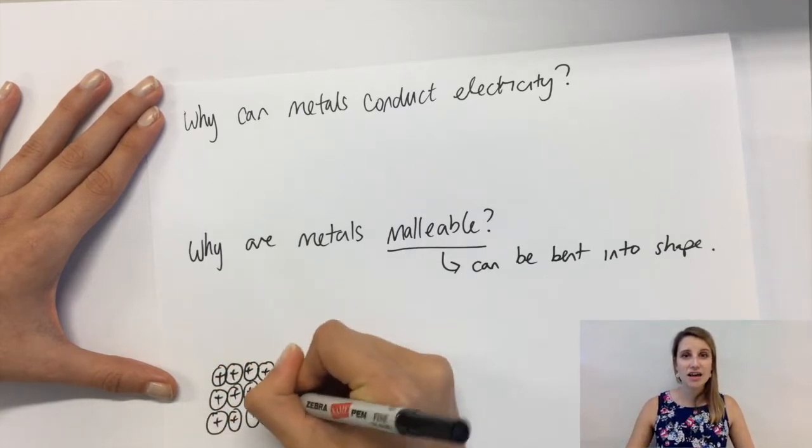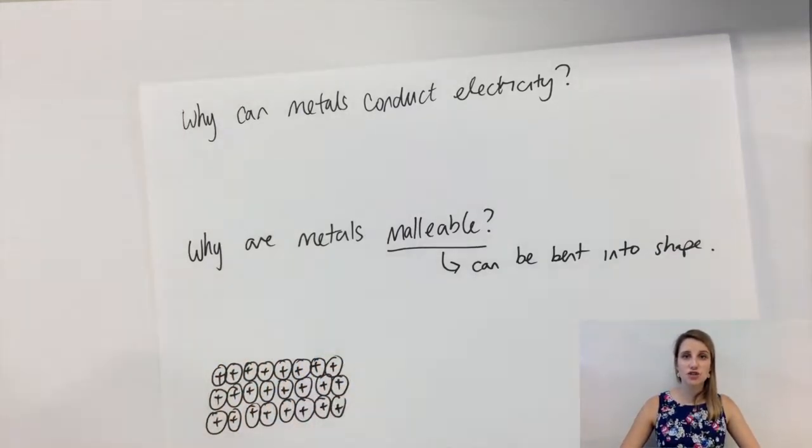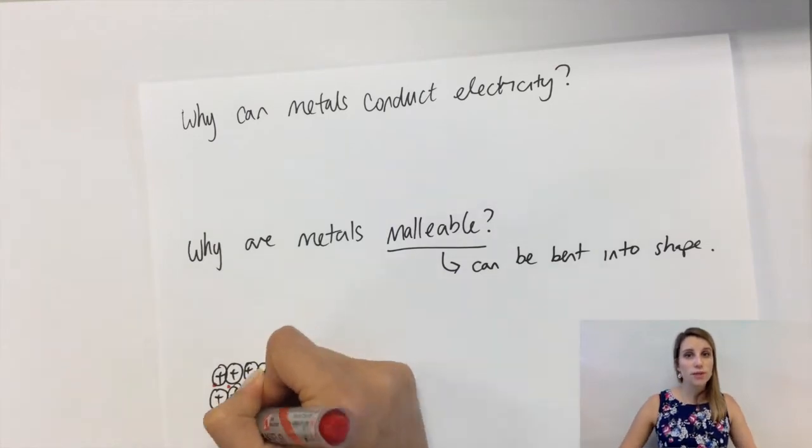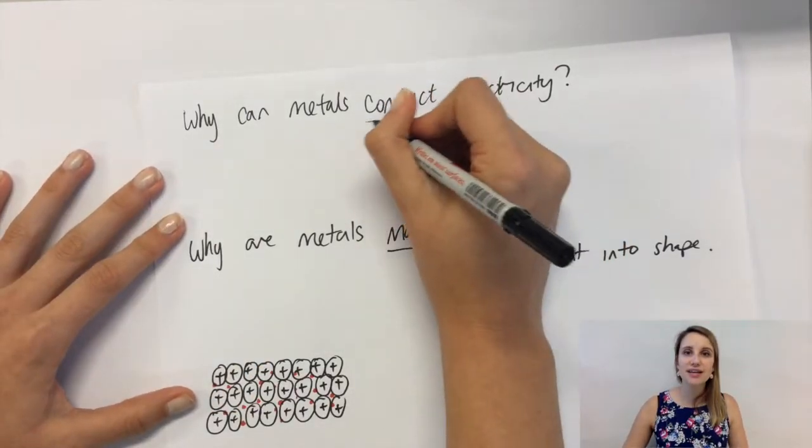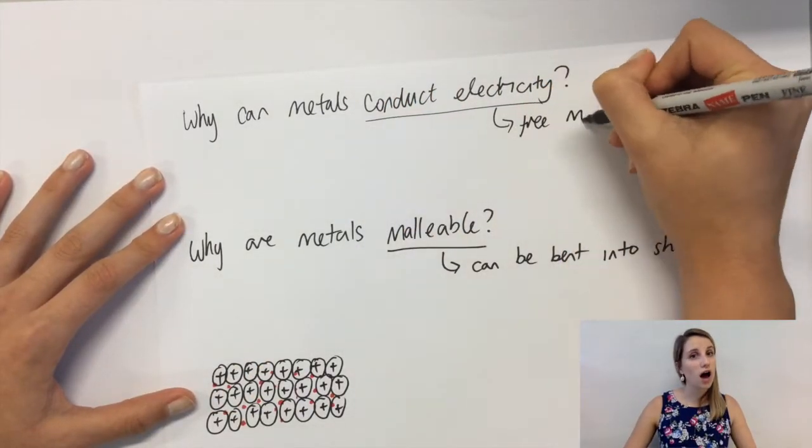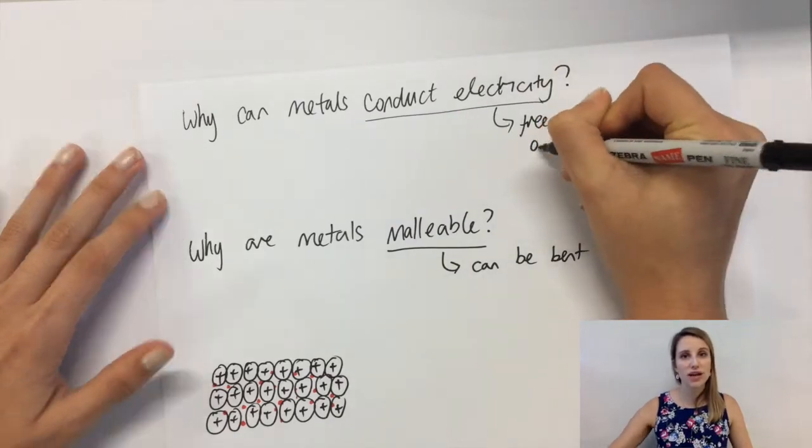First, let's have a look at why metals conduct electricity. You should know that to conduct electricity, something needs to have either free-moving ions or free-moving electrons.